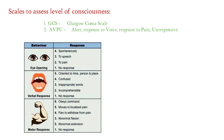The Glasgow Coma Scale has three components: eye opening, verbal response, and motor response. In eye opening, the patient can spontaneously open their eyes, open to speech, open to pain, or show no response. In verbal response, the patient can be oriented, confused, use inappropriate words, or show no response. In motor response, the patient can obey commands, localize pain, flex to withdraw, show abnormal flexion, show abnormal extension, or show no response.